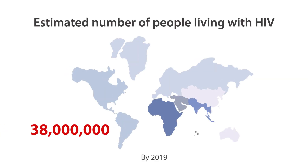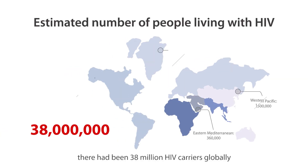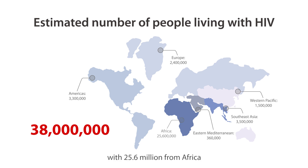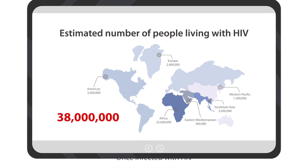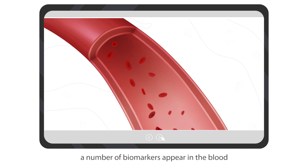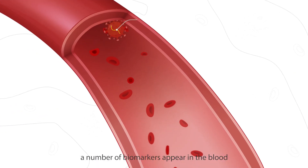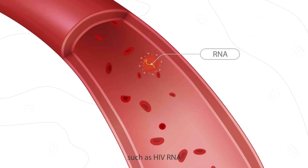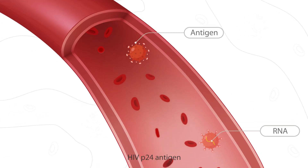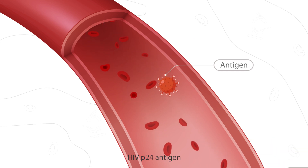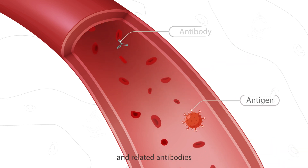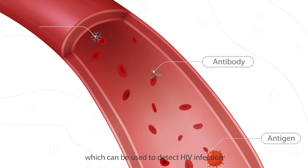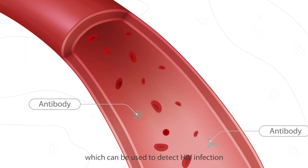By 2019, there had been 38 million HIV carriers globally, with 25.6 million from Africa. Once infected with HIV, a number of biomarkers appear in the blood, such as HIV RNA, HIV P24 antigen, and related antibodies, which can be used to detect HIV infection.